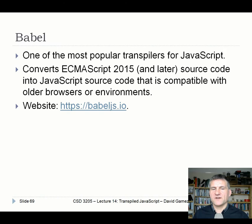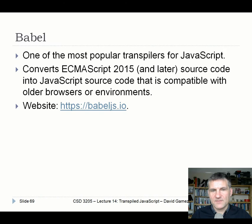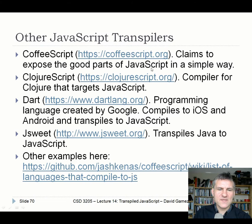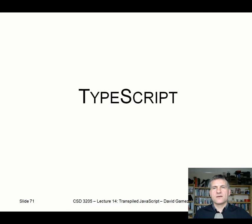The most popular transpiler is Babel, which converts ECMAScript 2015 and later source code into JavaScript compatible with older browsers and environments. Babel has lots of cool plugins and a huge user community. If all you want is to transpile later JavaScript to older JavaScript, Babel is the right tool. But if you want to use TypeScript as well, the TypeScript transpiler is a better choice. There are loads of transpilers out there — transpiling from different programming languages, or fancier versions of JavaScript.